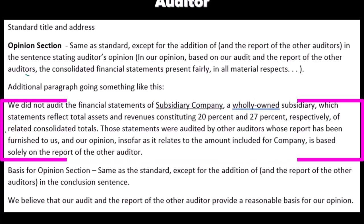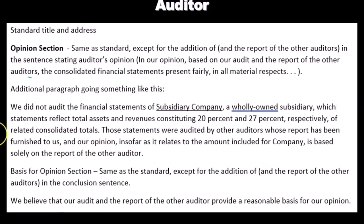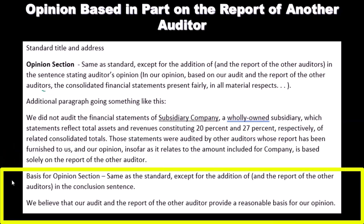'Our opinion, insofar as it relates to the amounts included for the company, is based solely on the report of the other auditor.' This paragraph is basically stating exactly what is going on — it gives approximations about what component was not audited and makes clear that it wasn't audited by us but that we're completely dependent on the audit work of another firm. The basis for opinion section would be the same as the standard unqualified except for the addition of 'and the report of the other auditors' in the conclusion sentence: 'We believe that our audit and the report of the other auditors provide a reasonable basis for our opinion.'